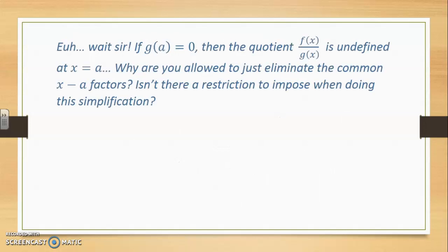Same person as before in the background saying, wait sir, if g at a is 0 then the quotient f over g is undefined at x equals a. So why are you just allowed to eliminate common x minus a factors? Isn't there a restriction to impose when we do this kind of simplification?